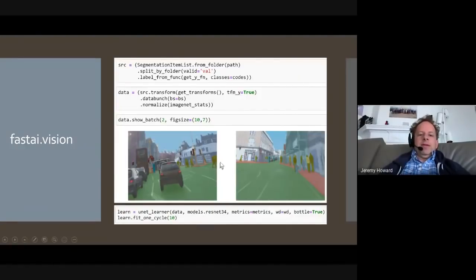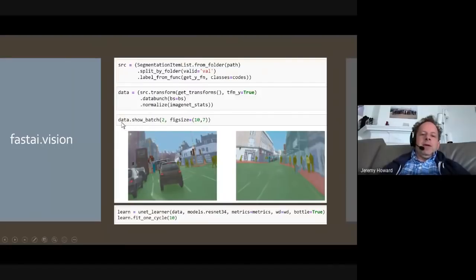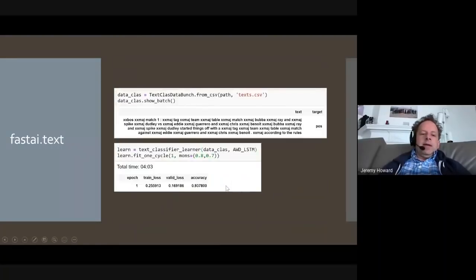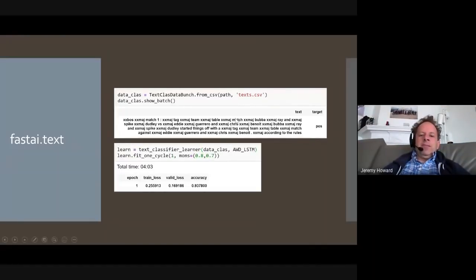So these five lines of code are super good five lines of code. And as you can see, it includes a line of code which, if you say show batch, it will display your data in an appropriate format, in this case, showing you segmentation, a picture, and the color-coded pixels overlaid on top of the picture. The same basic four lines of code will do text classification. So here's the basis of ULM-FIT, which is a system that we developed and wrote up along with Sebastian Ruder for transfer learning in natural language processing.